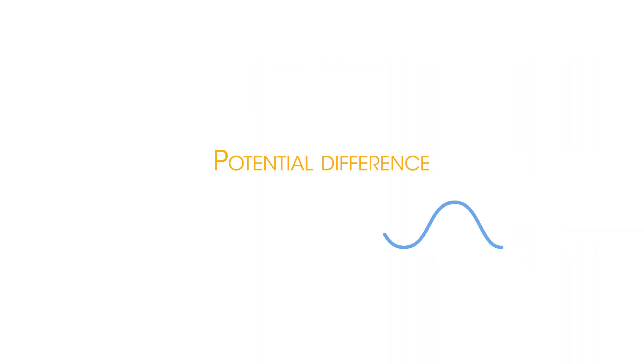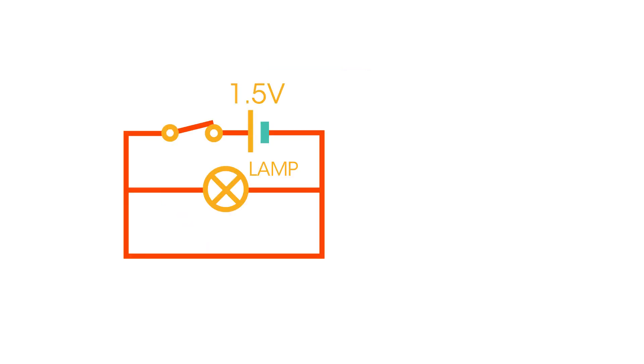Earlier we said that a potential difference is needed to make a current flow and that batteries or cells often provide this potential difference. Let's have a look at how we can measure the potential difference across the lamp in this circuit. We measure potential differences using a voltmeter. This voltmeter must be connected in parallel with the component we're measuring across. So here it's in parallel with the lamp. Then simply read what the voltmeter says, 1.5 volts. So the voltmeter goes in parallel and measures the potential difference.